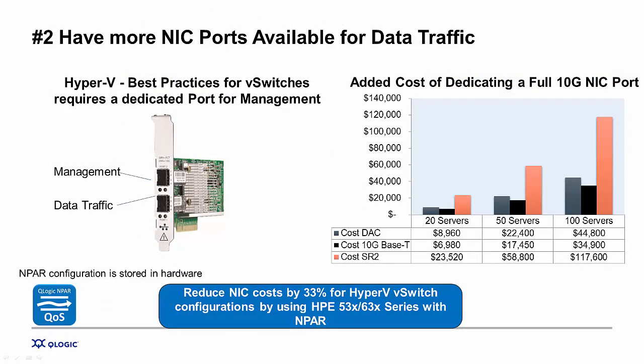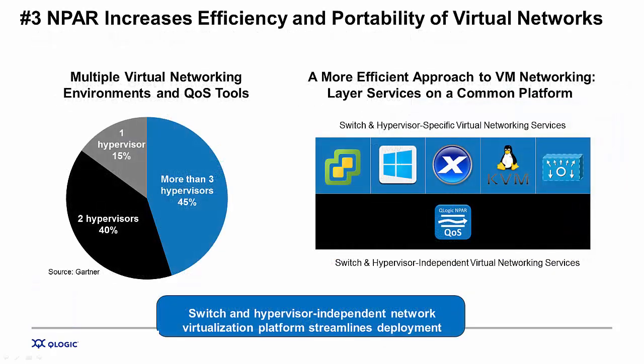In the second example, we compare the NIC partitioning capability of Hyper-V vSwitch to the free N-PAR feature in the HPE 530 or 630 series adapters from Qlogic. vSwitch environments require one port on an adapter be dedicated for the management function, meaning no data traffic can flow over that network. With N-PAR, that management port can instead be an N-PAR dedicated port. While the cost of a single adapter doesn't seem significant, at scale across a large data center, implementing N-PAR can save thousands of dollars in acquisition costs, plus reduce the number of physical connections to maintain and manage.